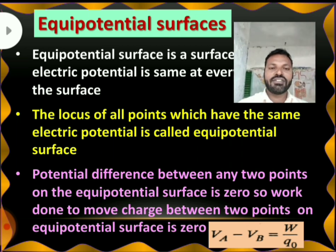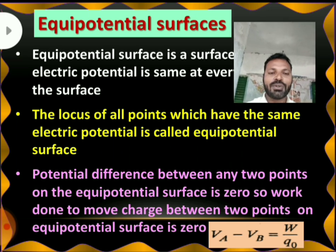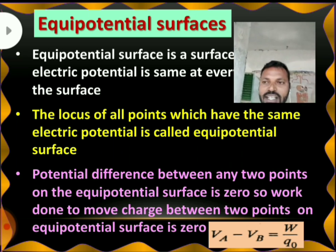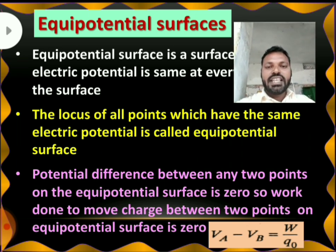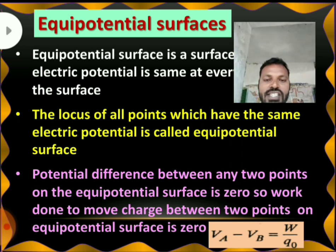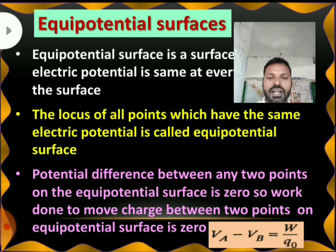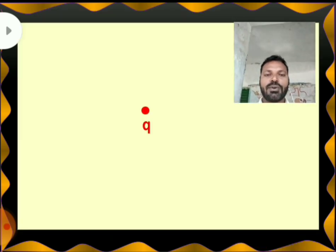Potential difference between two points being 0 means — what is the definition for potential difference? The work done to move a charge between two points. Now, potential difference Va minus Vb is equal to 0. That implies W by Q is equal to 0, so W is equal to 0. On equipotential surfaces, the potential difference between two points is 0, which implies the work done to move a charge between two points is also 0.